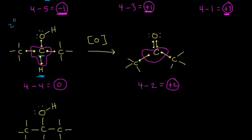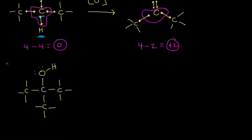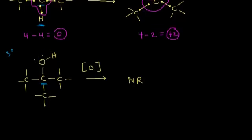Going from a secondary alcohol to a ketone, we see an increase in oxidation state, so this is definitely an oxidation reaction. Now let's look at a tertiary alcohol. When we find the alpha carbon of the tertiary alcohol, there are no hydrogens bonded to it. According to the mechanism, there's no way to oxidize this tertiary alcohol under normal conditions. If we attempt to oxidize it, we would say there's no reaction, since we are missing that alpha hydrogen.